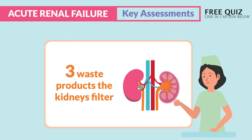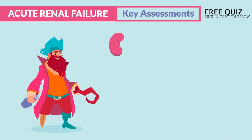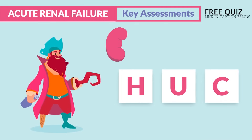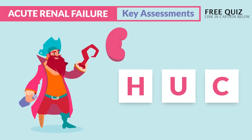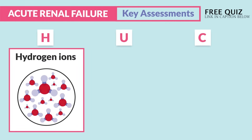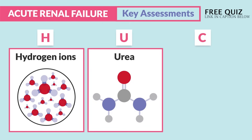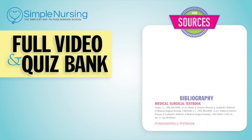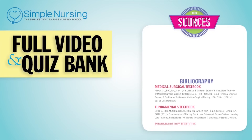For assessment findings, remember from anatomy: the three waste products the kidneys filter use the acronym HOOK — since kidneys look like a pirate hook. H is for hydrogen ions, which are very acidic; U is for urea; and C is for creatinine.